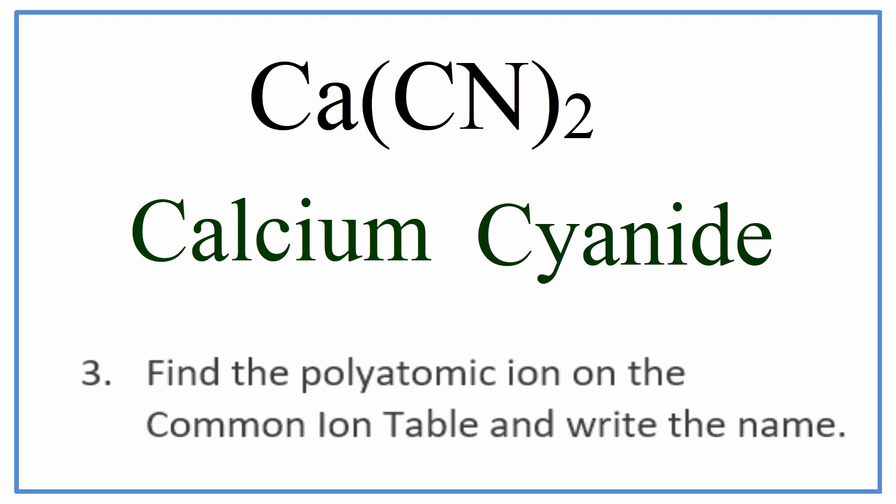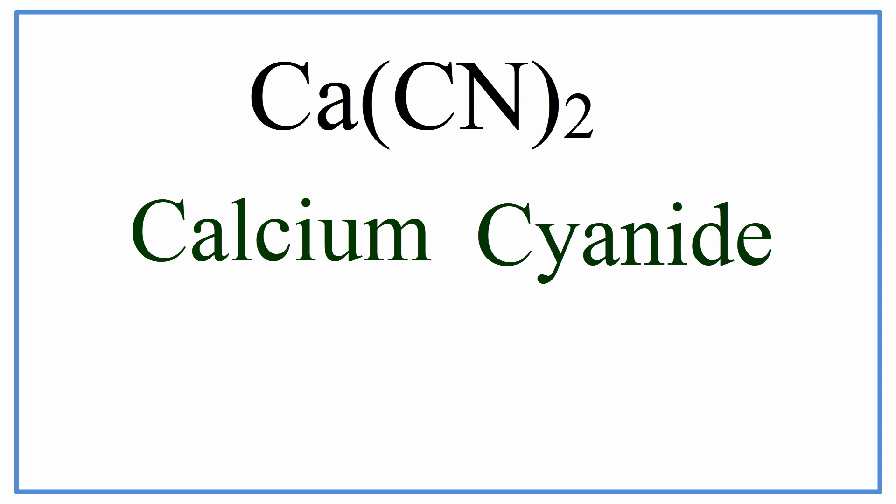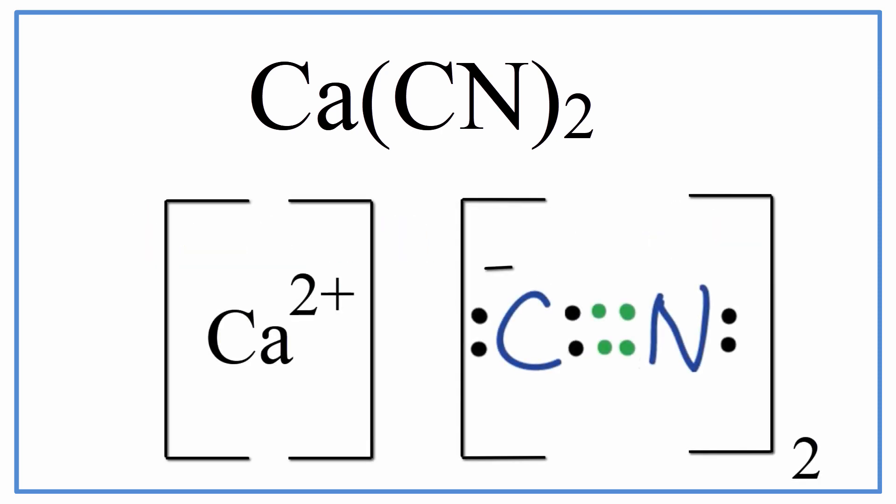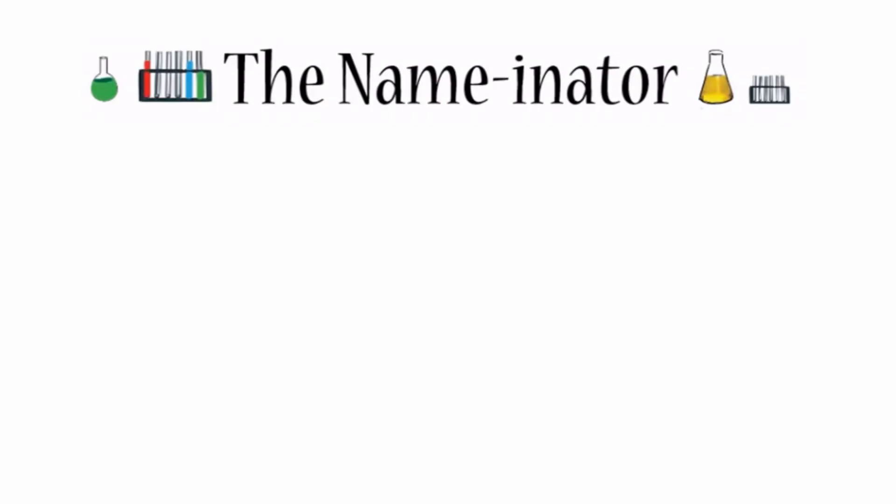And that's the name for Ca(CN)2, calcium cyanide. We can also write this as a Lewis structure, and that might look something like this. Note that this represents a formula unit, and that calcium cyanide is normally found as a crystal of many repeating formula units.